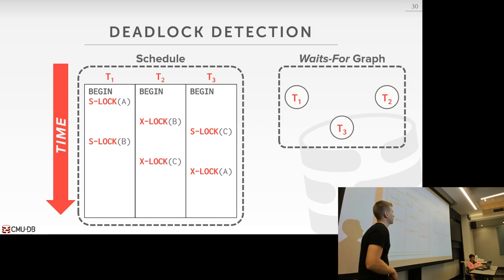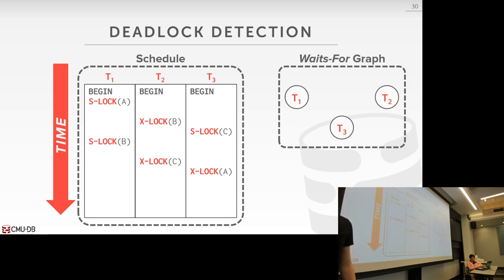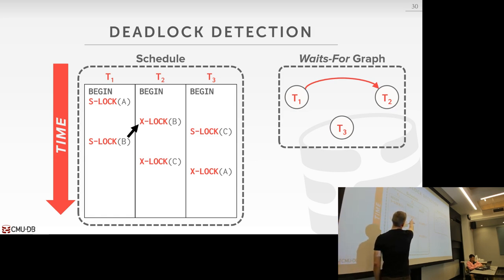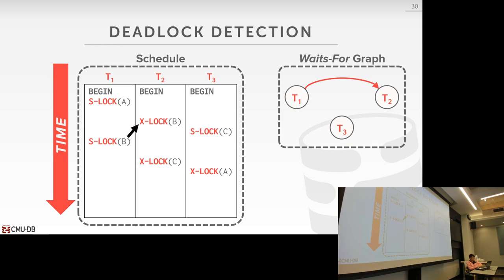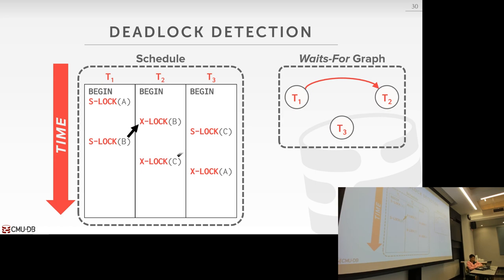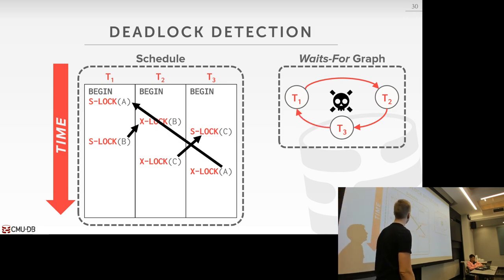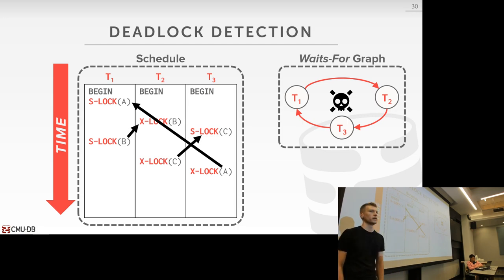In a simple waits-for graph example: T1 wants a shared lock that T2 already holds an exclusive lock on, so T1 gets an edge to T2. T2 wants an exclusive lock that T3 already holds a shared lock on, giving T2 an edge to T3. T3 wants an exclusive lock that T1 has a shared lock on, giving T3 an edge to T1. We have a cycle — a deadlock.